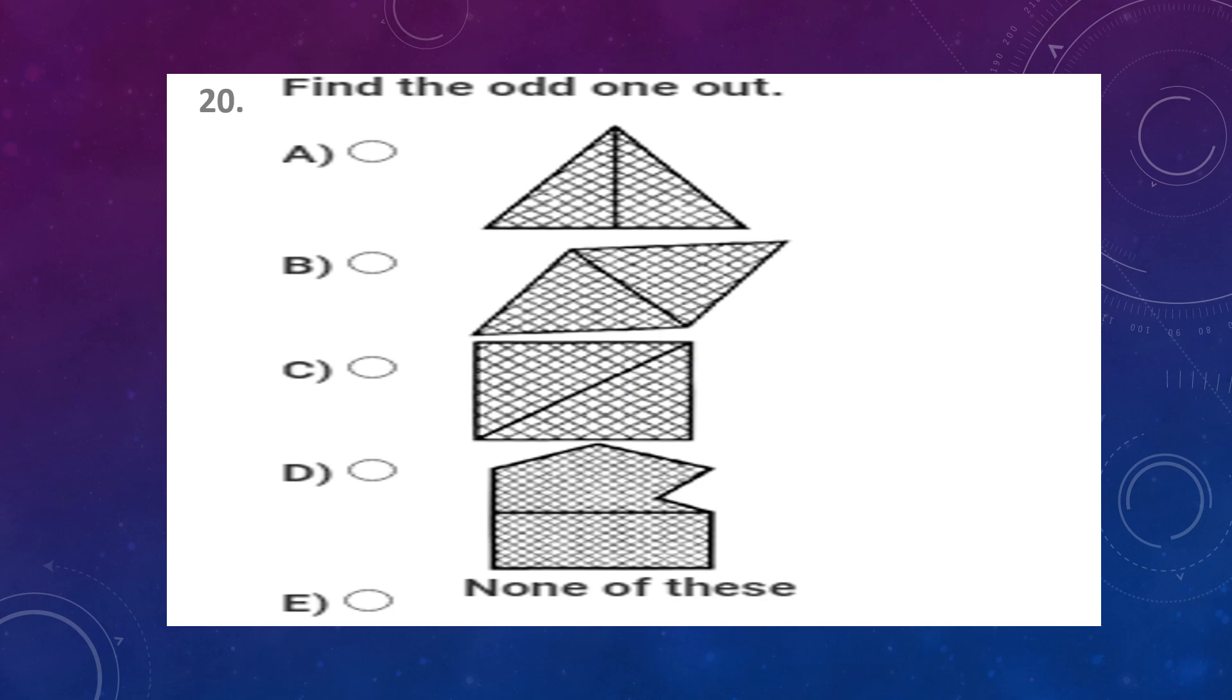Question number 19: Find the odd one out. The correct answer is option D, because this is an irregular shape.